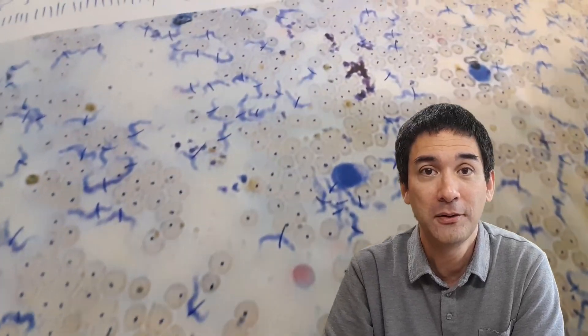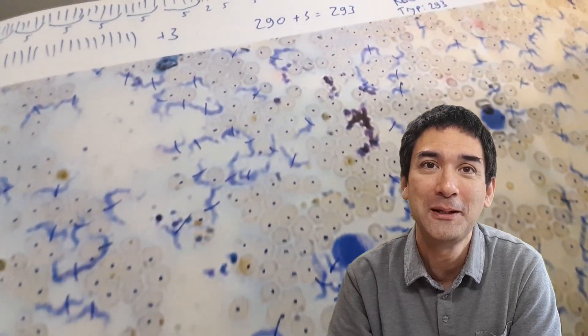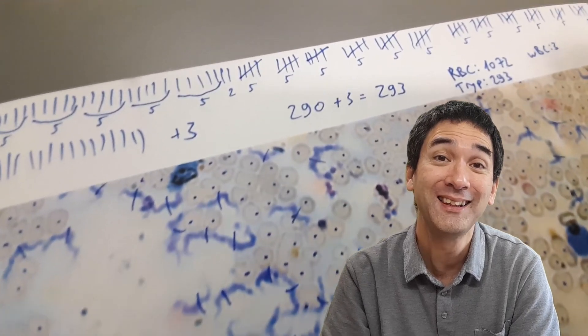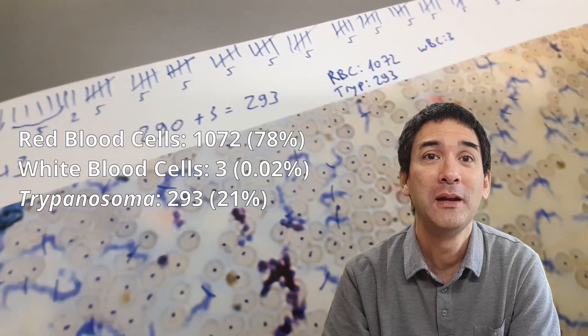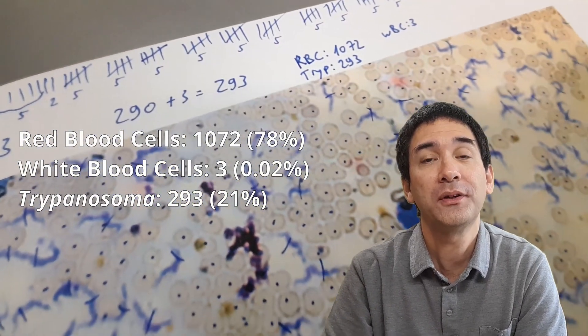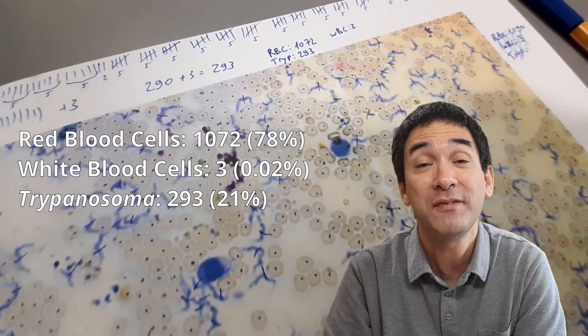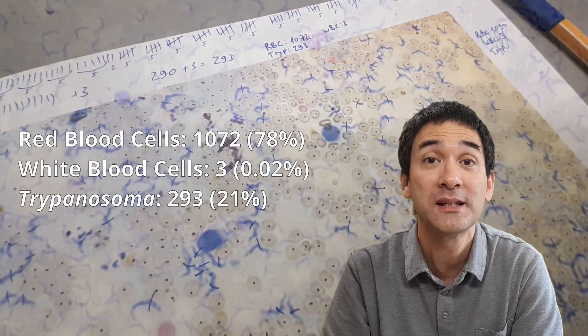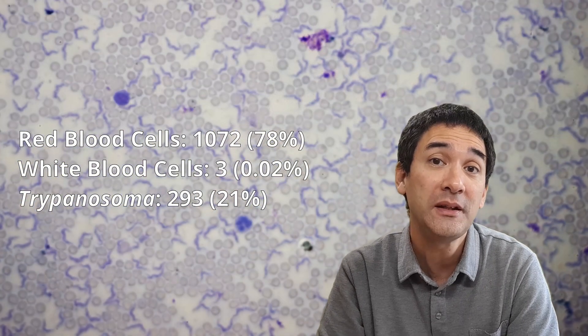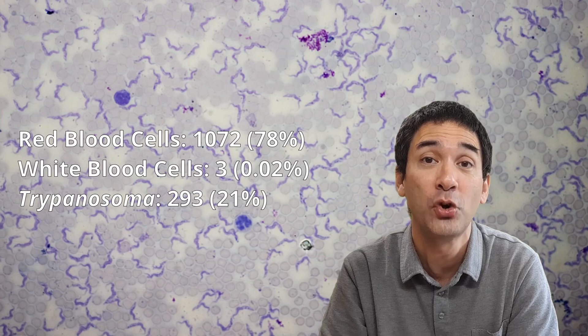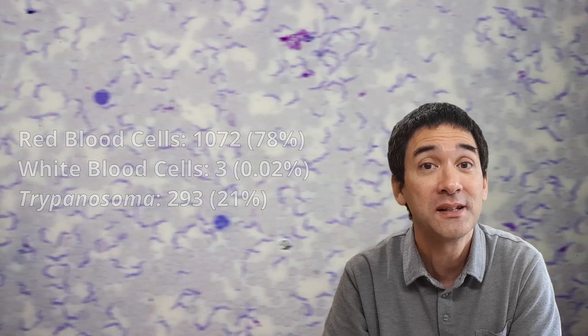After about 15 or 20 minutes and a little bit of math, I was able to determine that about 78% are red blood cells and about 21% are those trypanosomas. The number of white blood cells is far less than 1%, which is what we would actually also expect — the number of white blood cells is significantly lower than the number of red blood cells.